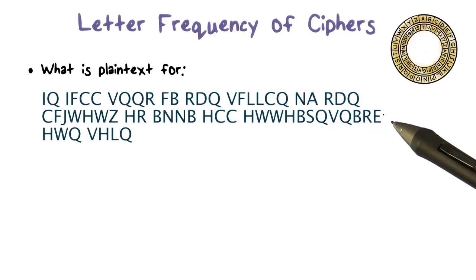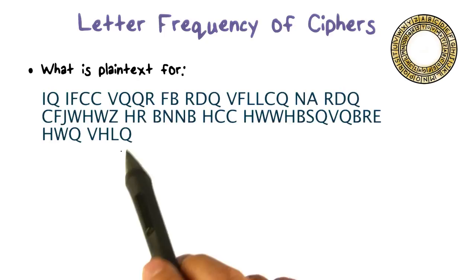To start, we notice that the letter q here in the ciphertext is the most frequent. And we know that in plaintext English, the letter e is the most frequent. So there's a high probability that q is in fact the plaintext letter e.